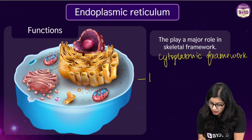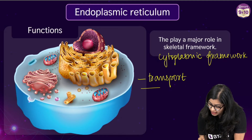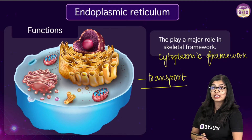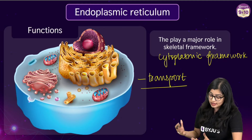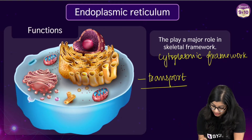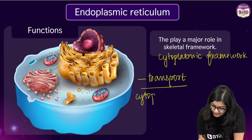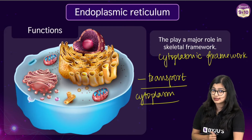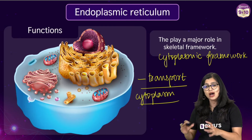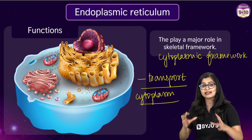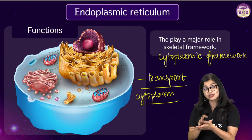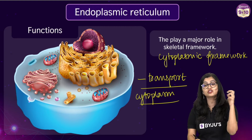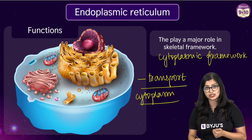Apart from this, the endoplasmic reticulum also serves as a channel for transporting various materials like proteins between the different regions of the cytoplasm or between the cytoplasm and the nucleus. There are certain parts of the endoplasmic reticulum which carry out specific functions.